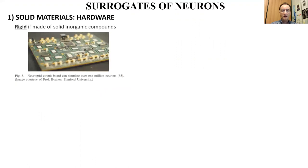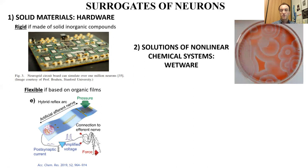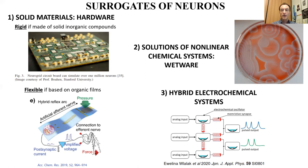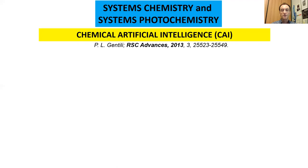Surrogates of neurons can be implemented through specific solid-state devices, non-linear chemical systems in wetware, or hybrid electrochemical systems. In our group we are working mainly in wetware. In particular, we propose the use of molecular, supramolecular, and systems chemistry and photochemistry to mimic some performances of human intelligence and develop chemical artificial intelligence.